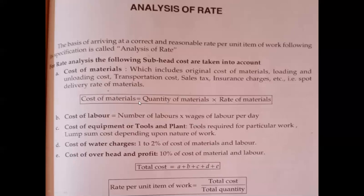To find the cost of materials, you should know what different types of materials are required for that particular item of work. For PCC, how much quantity of cement, sand, and coarse aggregate is required. Along with that, the rates of individual materials should be known and should be standard. Cost of labor — number of labors and their wages per day should be known. For cost of tools and plants, we put a lump sum.